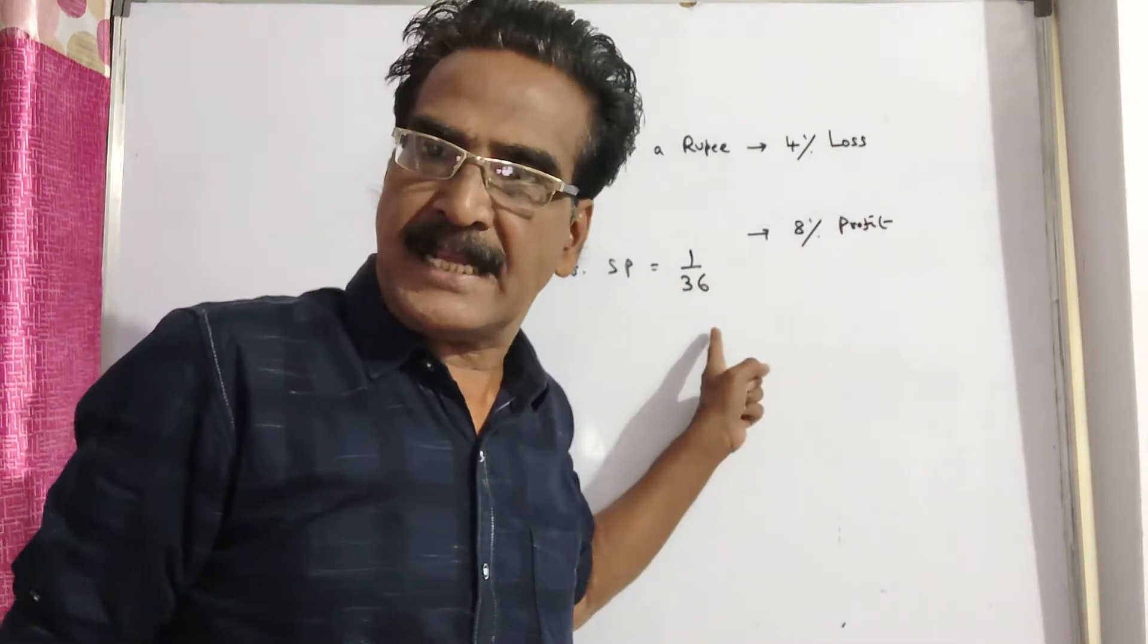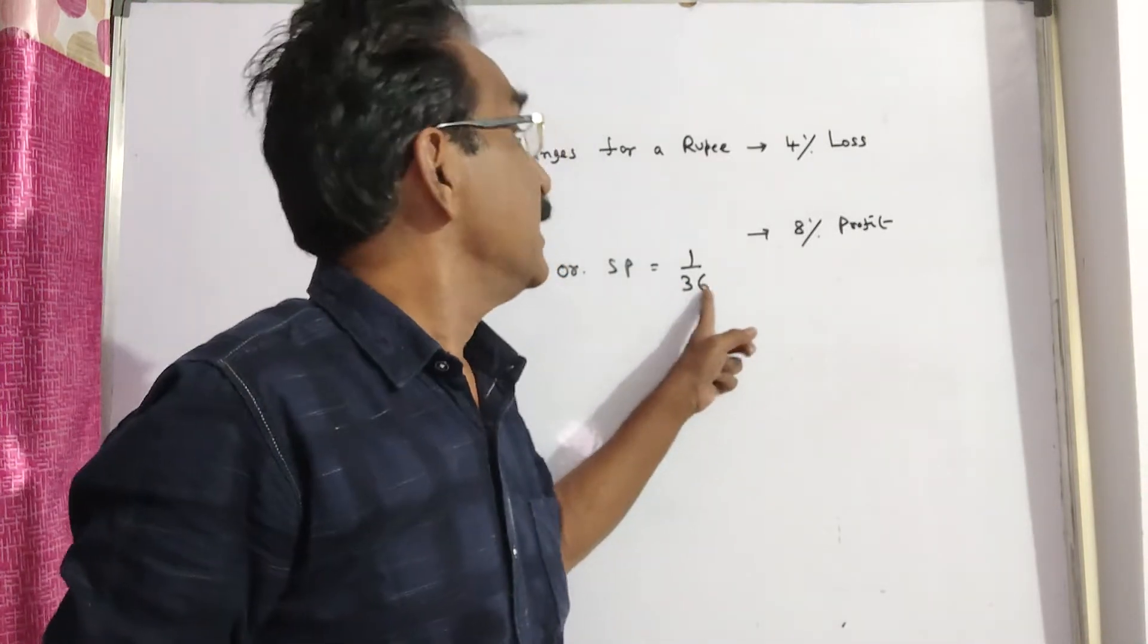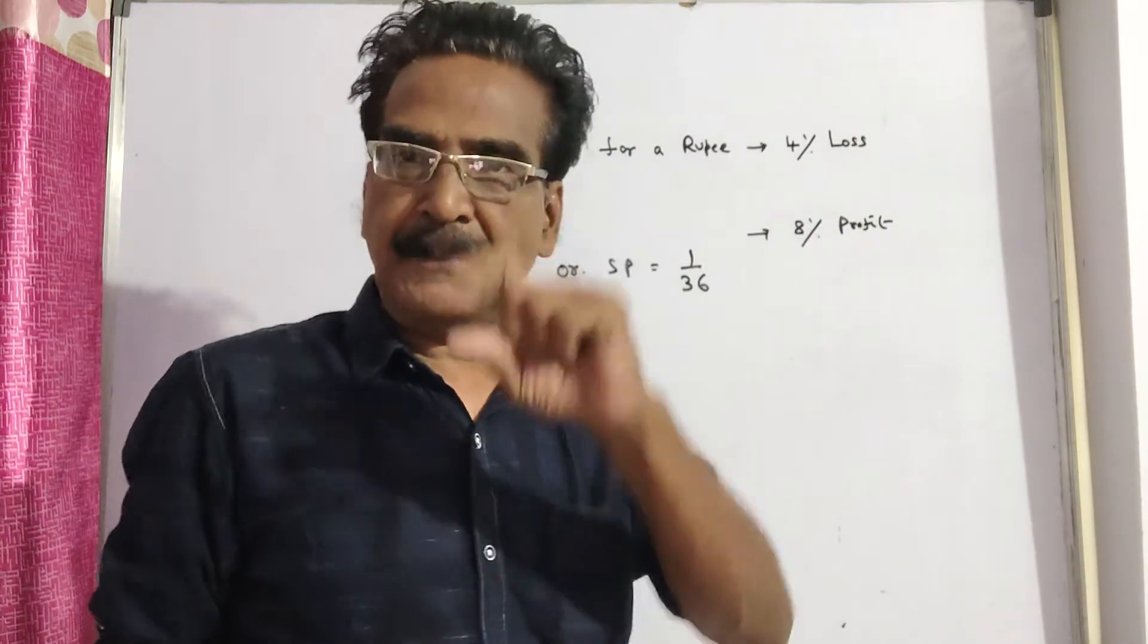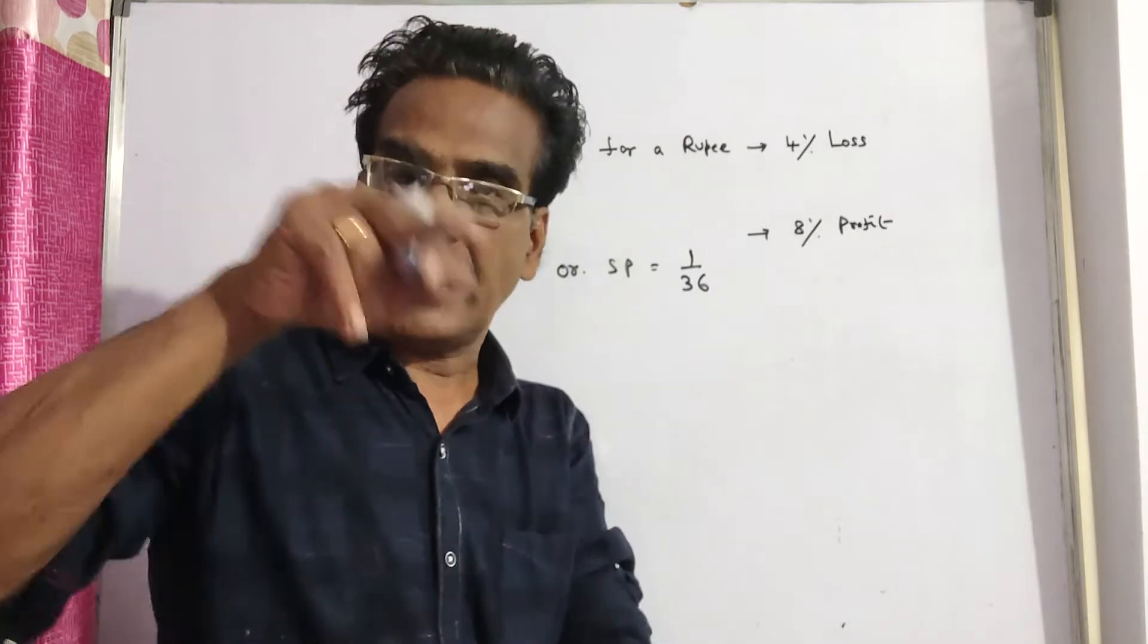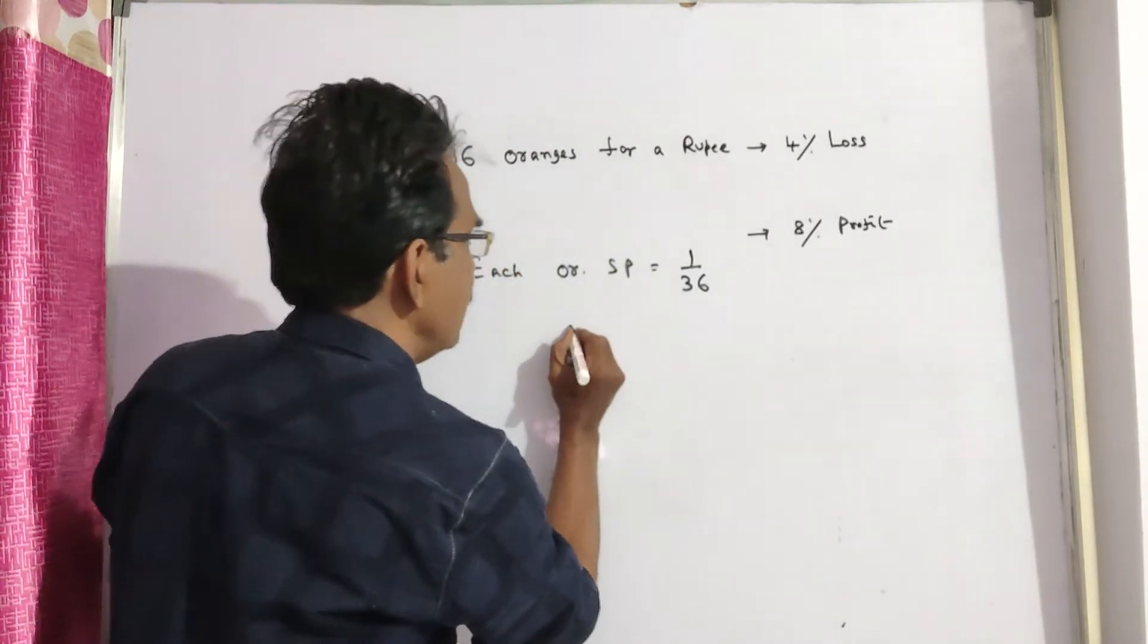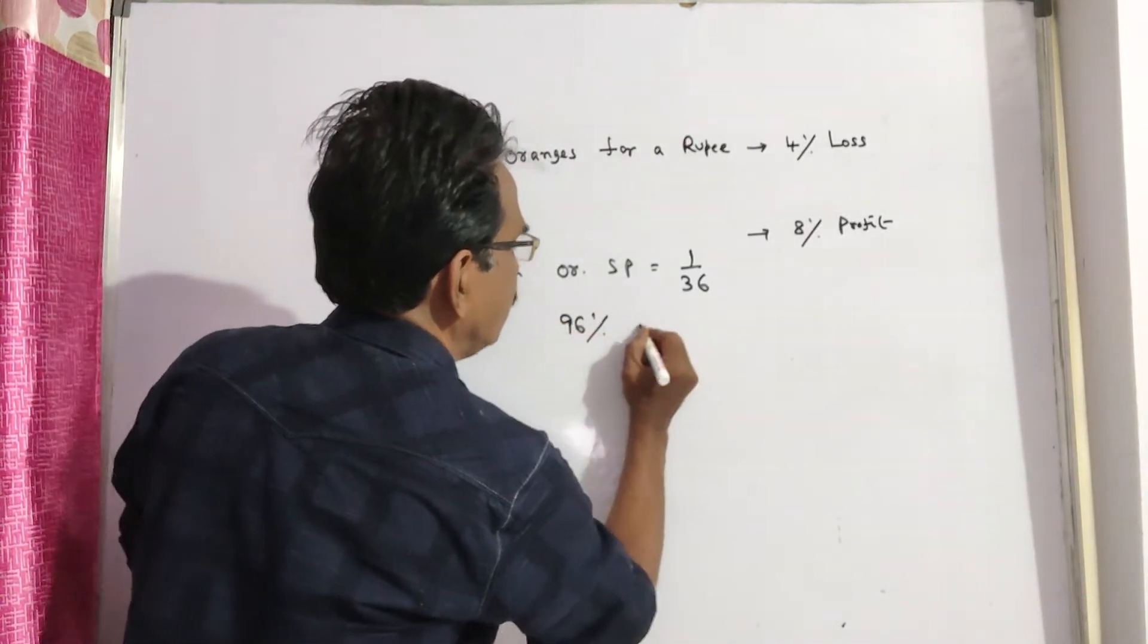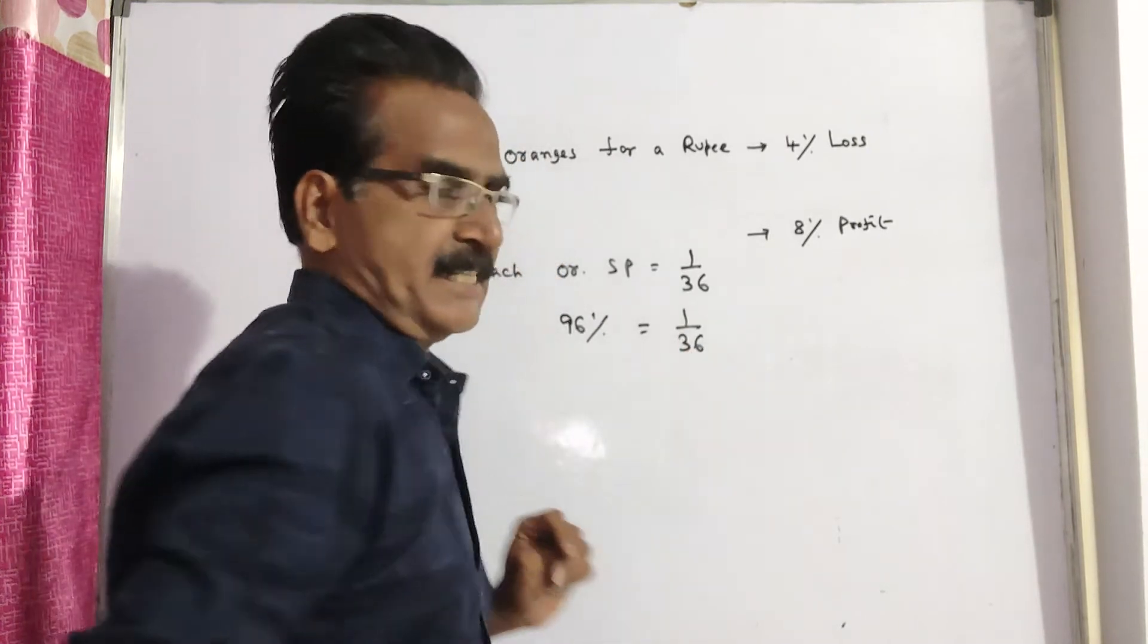If he is selling at this price, he is getting a loss of 4%. That means this 1 by 36 is equal to 96% of the cost price. So, 96% of the cost price is equal to 1 by 36.